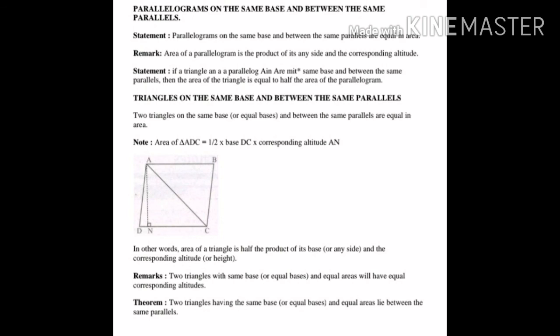In other words, the area of a triangle is half the product of its base and the corresponding altitude. Remark: Two triangles with the same base and equal area will have equal corresponding altitudes. دو triangles کا area equal ہو اور وہ same base پر ہوں تو ان کے altitudes بھی equal ہوں گے۔ یہ سارے concepts بہت دھیان سے یاد رکھیں۔